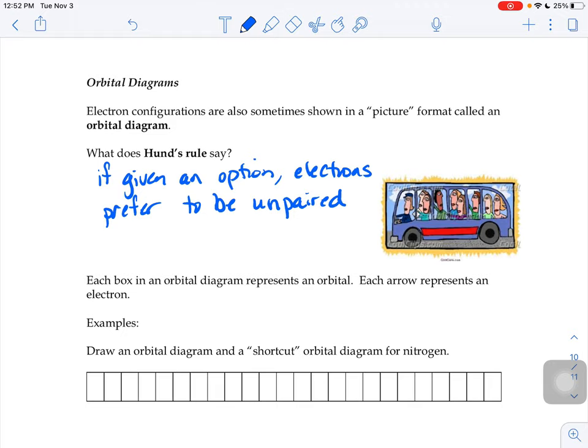Now, obviously, electrons don't have emotions. They can't prefer something. But the electrons are going to, if given a choice, if there's multiple orbitals available to it, go into an open, empty orbital first before it pairs up with another electron.